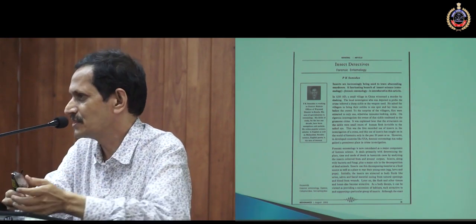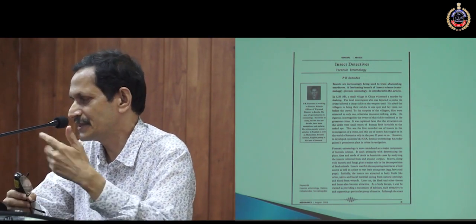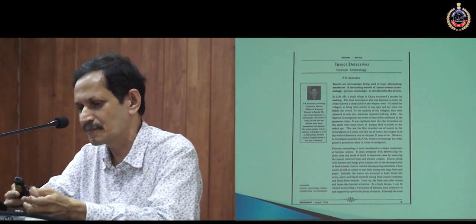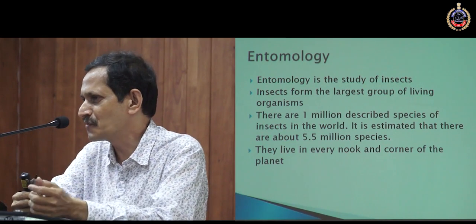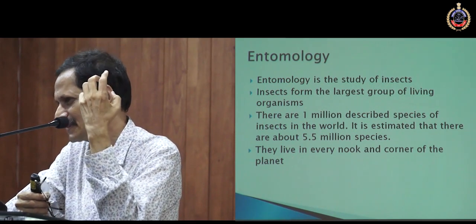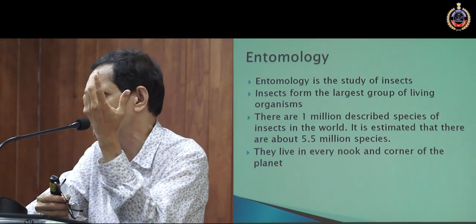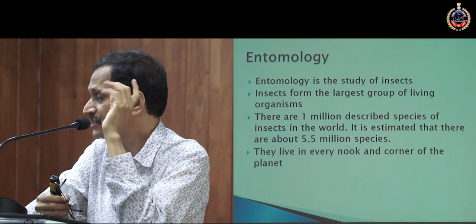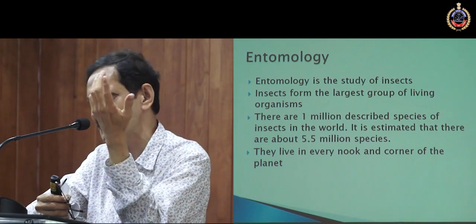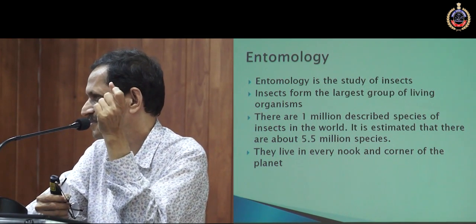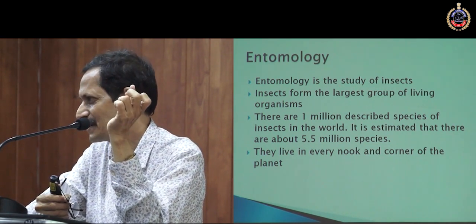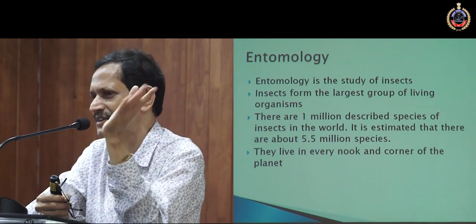Since this is a heterogeneous group, I'm not very sure that all of you are aware of some of the basic things about entomology. Entomology means the study of insects. The insect group is the biggest group of living organisms, having one million described species — that means we know the names of one million species. But it is estimated that there could be at least 5.5 million insect species which are yet to be described. Only one-fifth of the total insects are named at present.